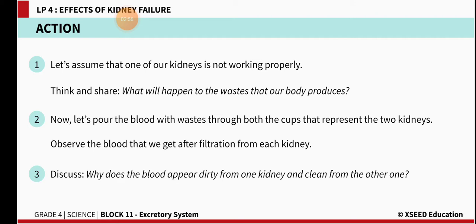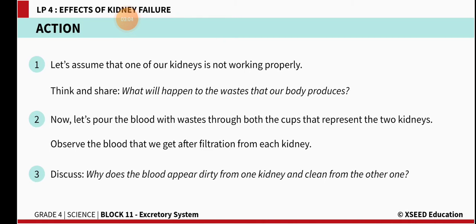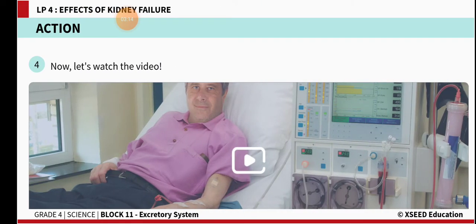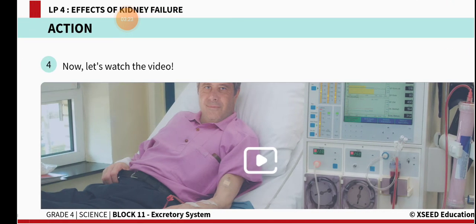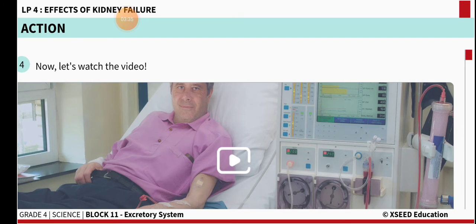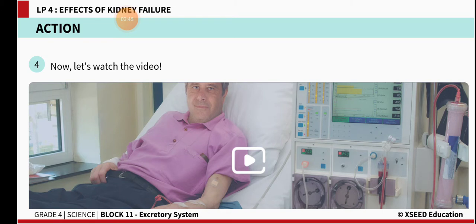Now for today's experiment, the only change is that we are using one cotton ball in only one glass. Pour the water as we did yesterday. You can see how the cotton is filtering, and from the glass without the cotton ball, how the waste products move along with the water. In the same way, when only one kidney is functioning in our body, waste materials travel along with the blood.